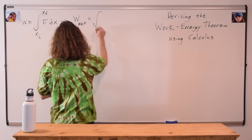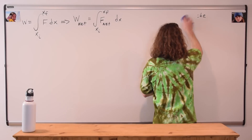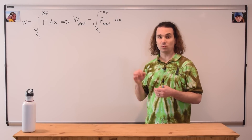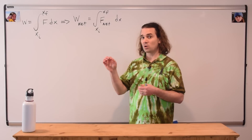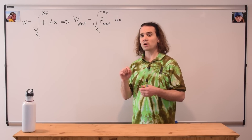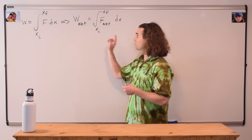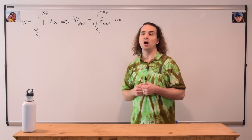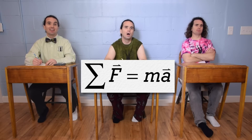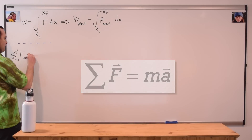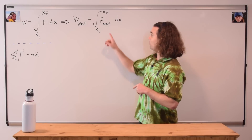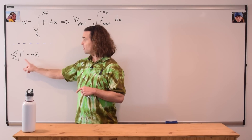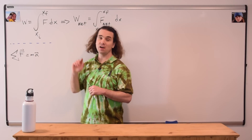However, we want to use net work, which means when we replace work with net work, we also need to replace force with net force. What is Newton's second law? Net force equals mass times acceleration, where both force and acceleration are vectors. Correct — which means we can replace the net force with mass times acceleration.